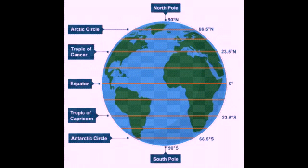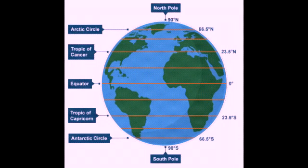These are some of the important parallels we need to learn: the equator at 0°, the tropic of cancer at 23.5° north, the arctic circle at 66.5° north, the north pole at 90° north. In the southern hemisphere: the tropic of capricorn at 23.5° south, the antarctic circle at 66.5° south, and the south pole at 90° south.